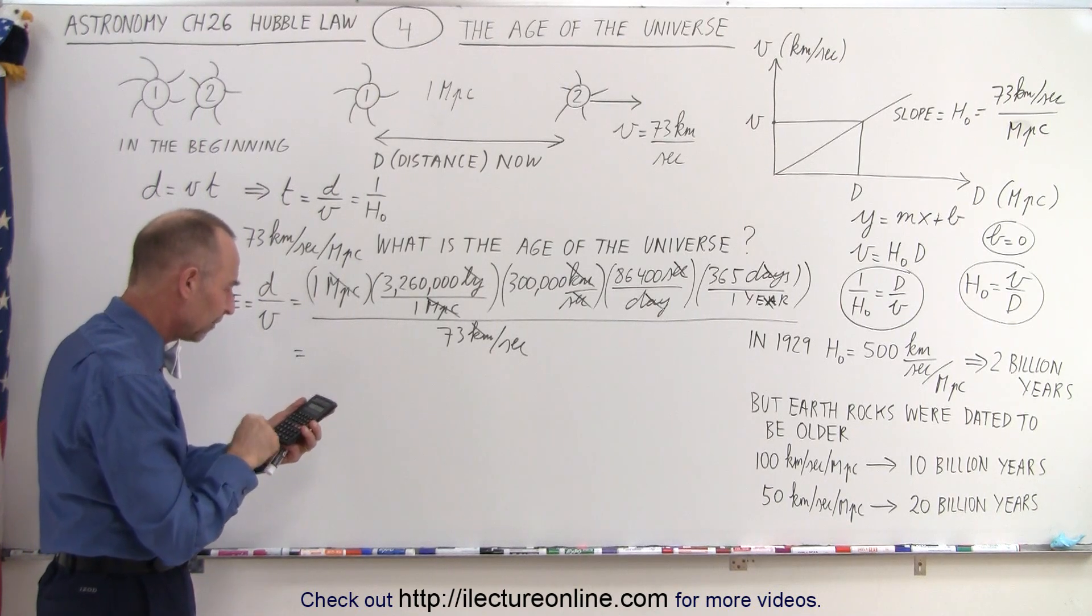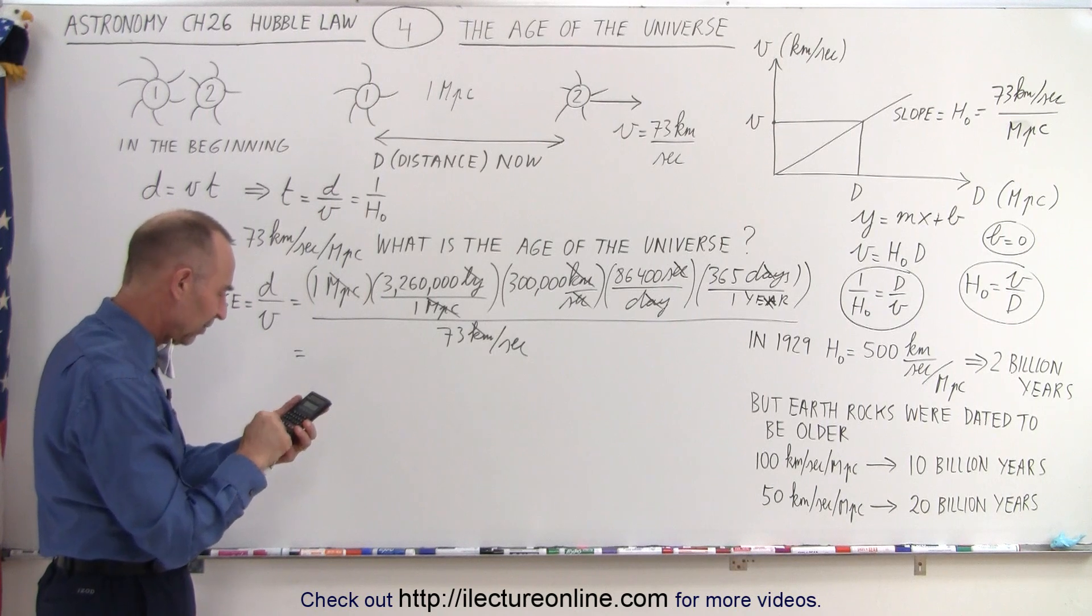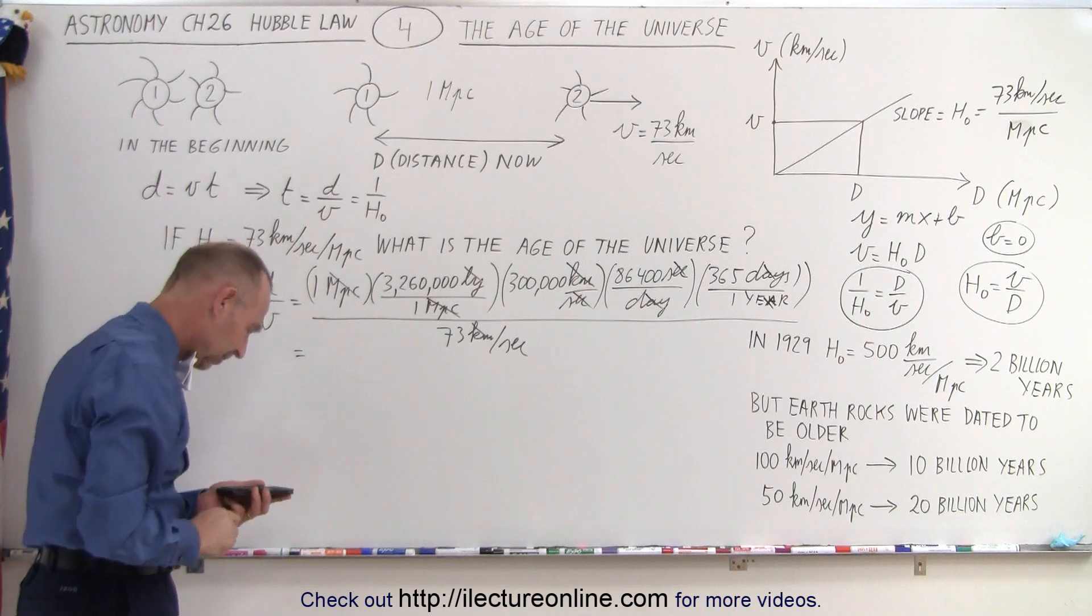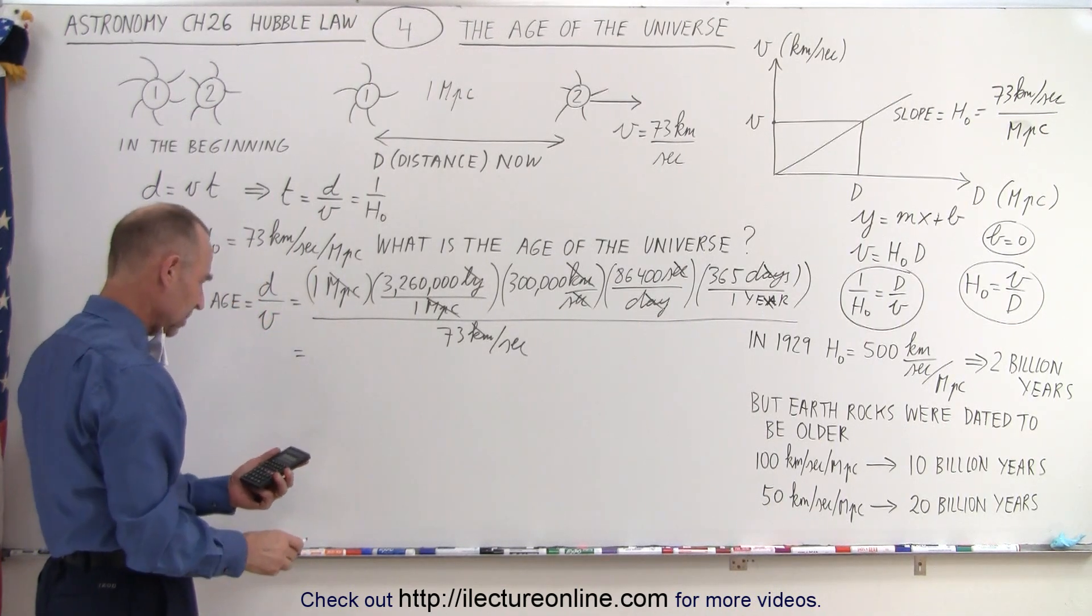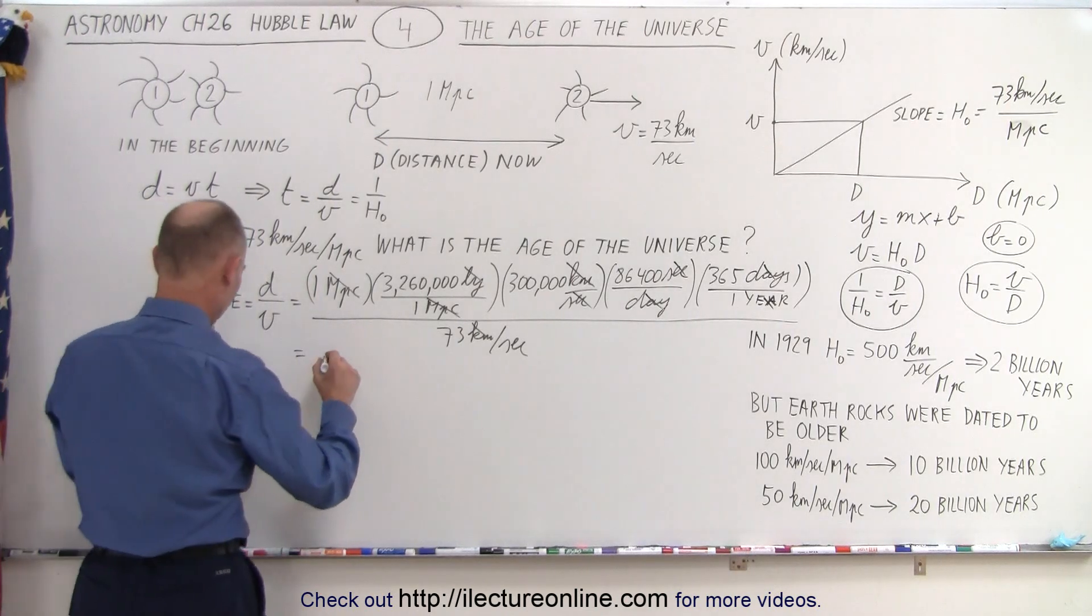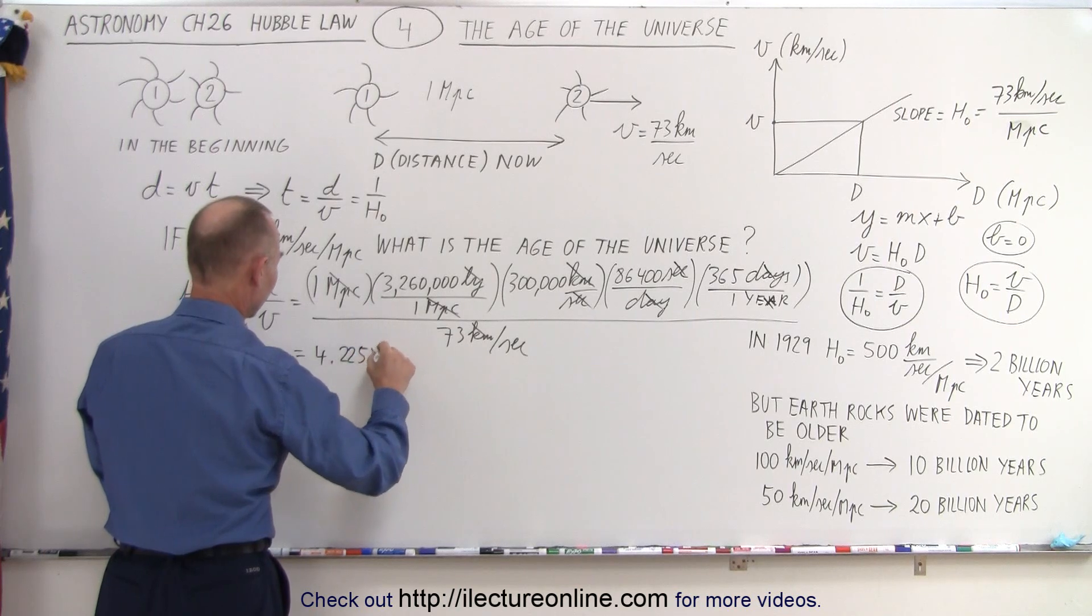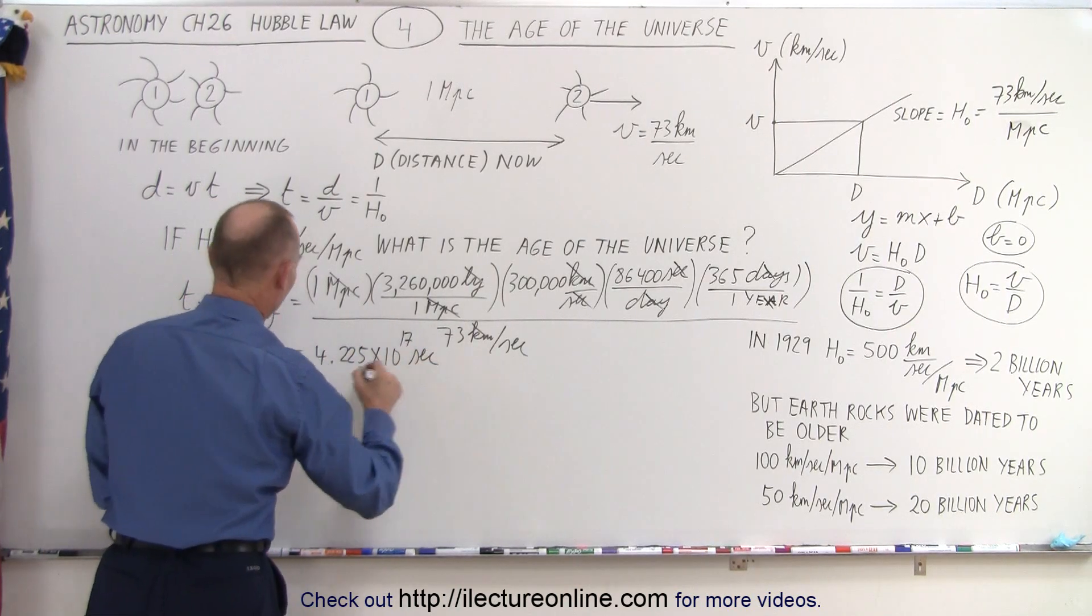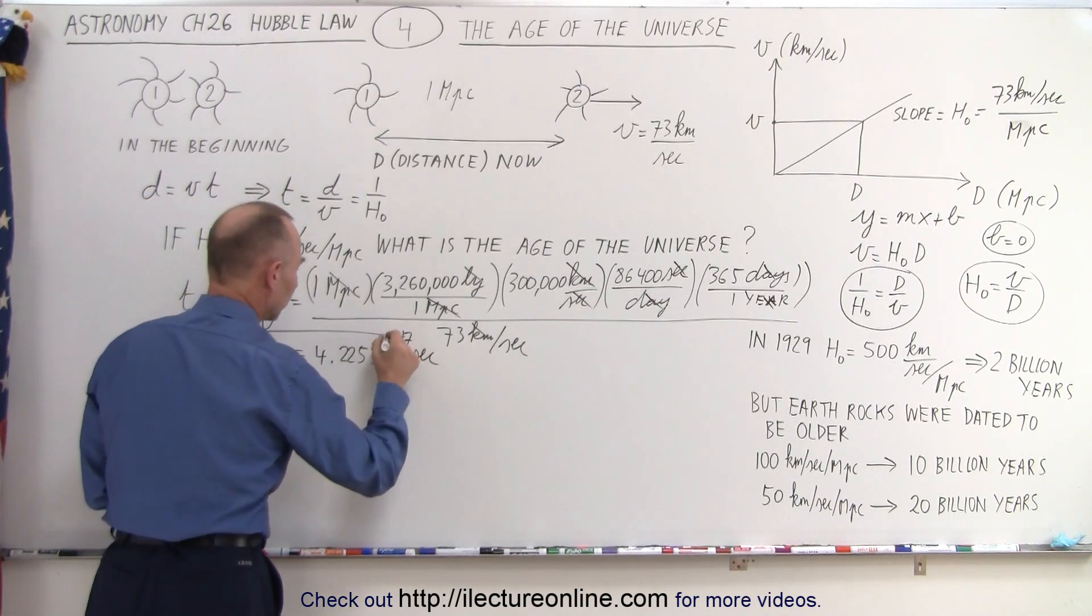So 3,260,000 times 300,000 times 86,400 times 365 divided by 73 equals, and I get 4.225 times 10 to the 17th. So I get 4.225 times 10 to the 17th seconds. And that's the age of the universe in seconds.